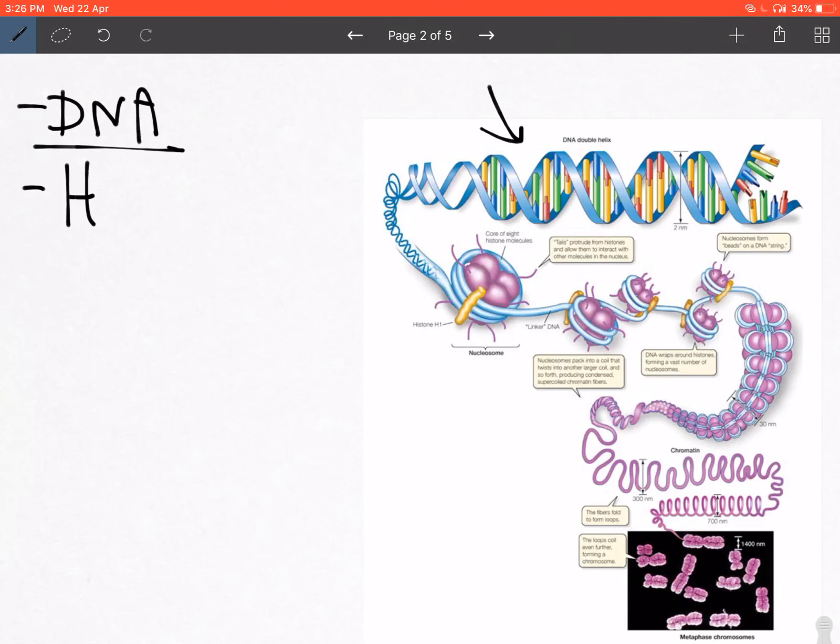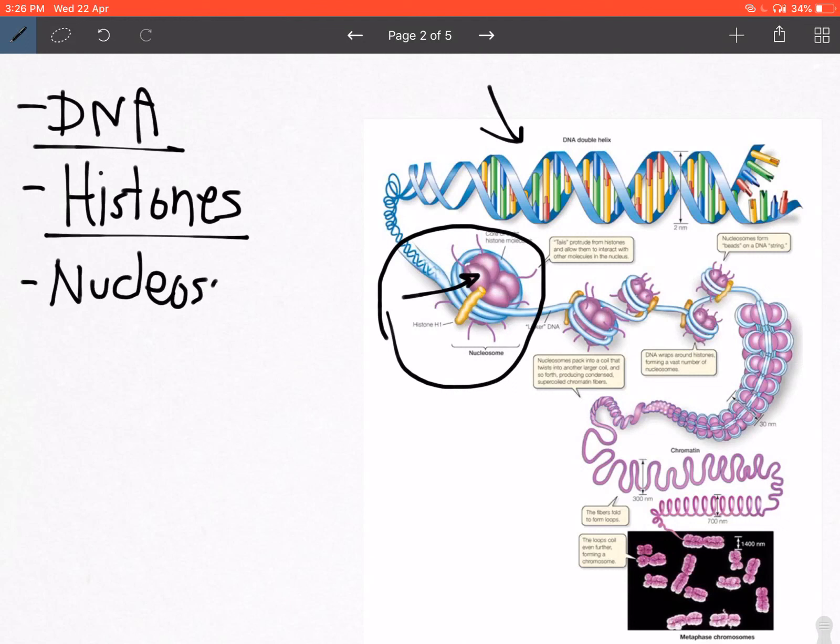As the DNA starts folding, it kind of folds over certain molecules that are known as histones. There's an octamer of histones, which again we don't want to talk about in detail, but this is basically a histone core and you can see the DNA winding around that, forming what is known as a nucleosome. It's a bead-like structure, and this nucleosome keeps on folding and superfolding upon itself.